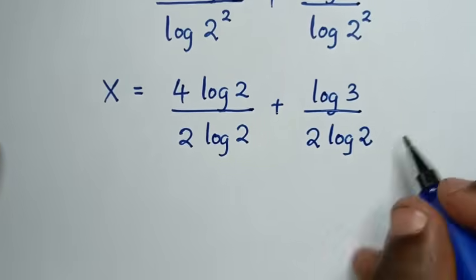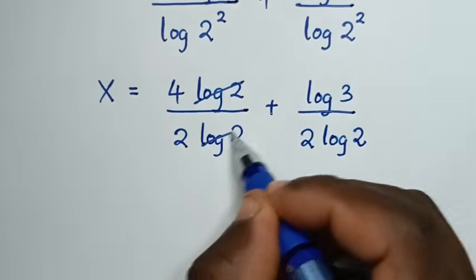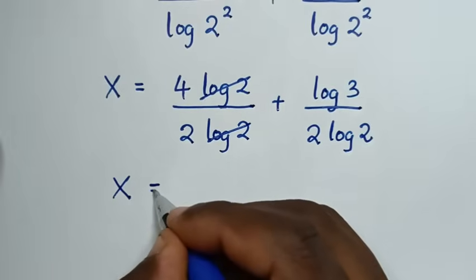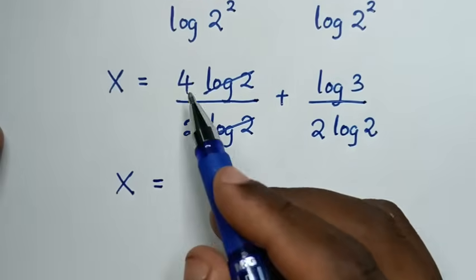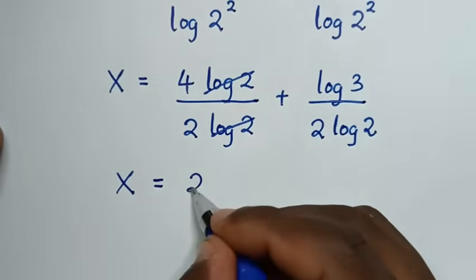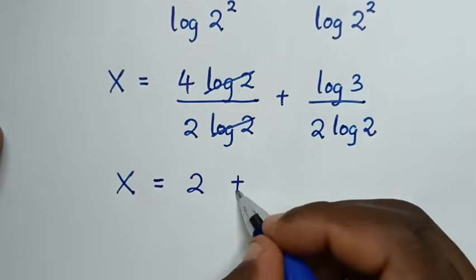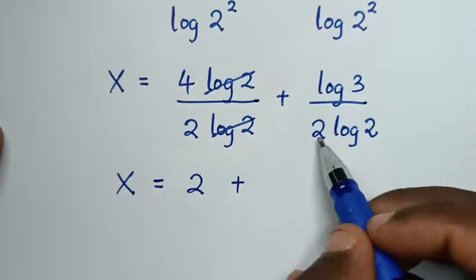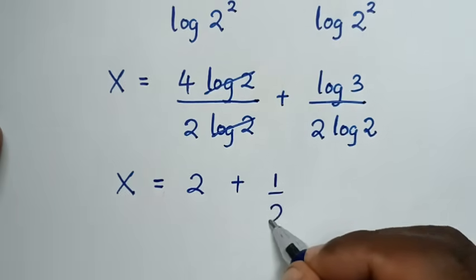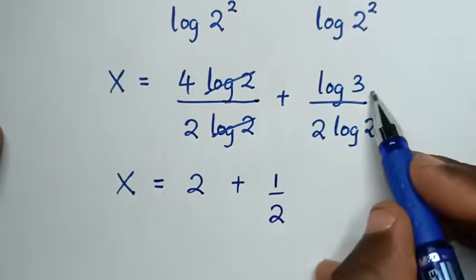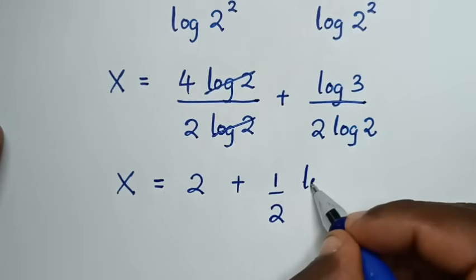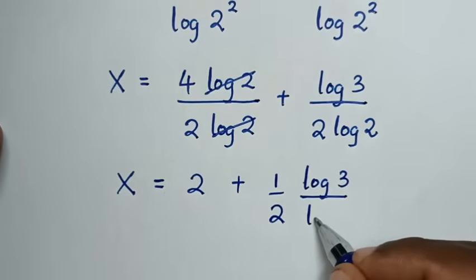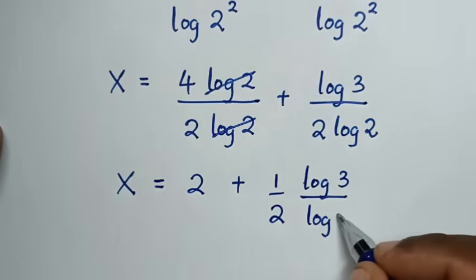Then to simplify: log of 2 cancels log of 2, so it will be x is equal to 4 divided by 2, which is 2, plus — here it is same as 1 over 2 — so 1 over 2 times log of 3 over log of 2.